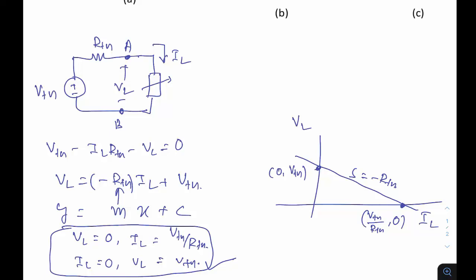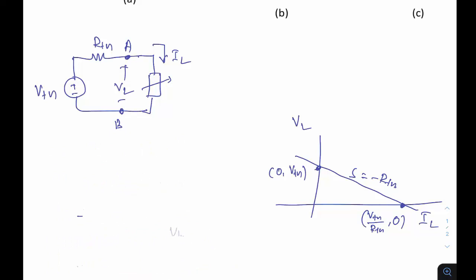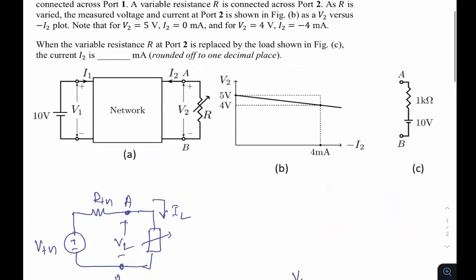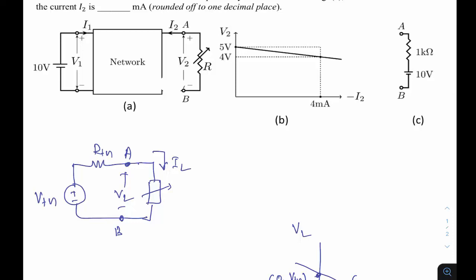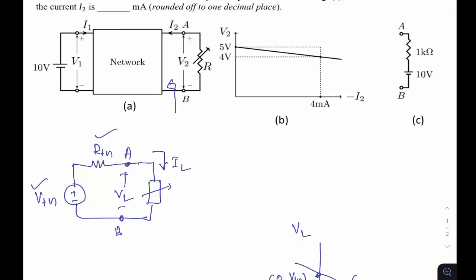This data is enough to proceed. The approach is to replace the network to the left of terminal ab by its Thevenin model — any network containing resistors and sources can be replaced by a Thevenin equivalent with Vth and Rth in series. At the end, this Thevenin equivalent is connected to the load from figure c, which is a 1 kΩ resistor in series with a 10-volt source.